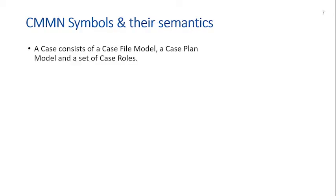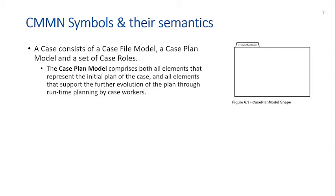CMMN is a graphical language with a number of symbols, each having particular semantics. The core of the notation is that a case consists of a case file model, a case plan model, and a set of case roles. The case plan model is shown as a big folder with the name of the case at the top, comprising all elements representing the initial plan and also elements supporting the further evolution of the plan through runtime planning by case workers.